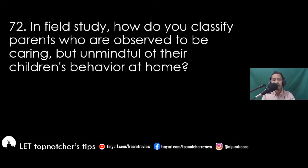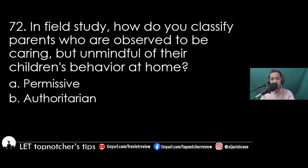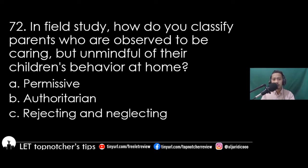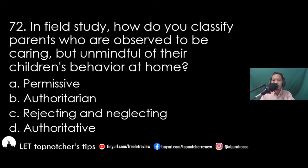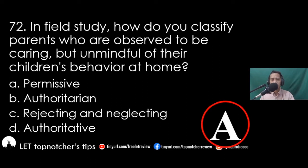Item 72: In a field of study, how do you classify parents who are observed to be caring but unmindful of their children's behavior at home? A) permissive, B) authoritarian, C) rejecting and neglecting, D) authoritative. The best answer is letter A, permissive.